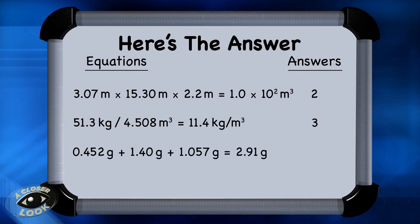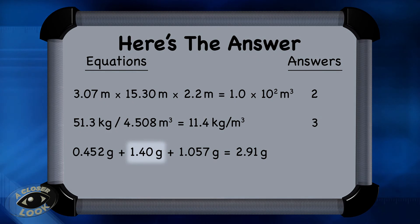Question 3 is an addition problem, so after you put the numbers into a calculator, you determine which of the starting values has the lowest decimal place. And 1.40 only goes to the hundredths place, so the final answer, 2.91, had to be rounded to the hundredths.